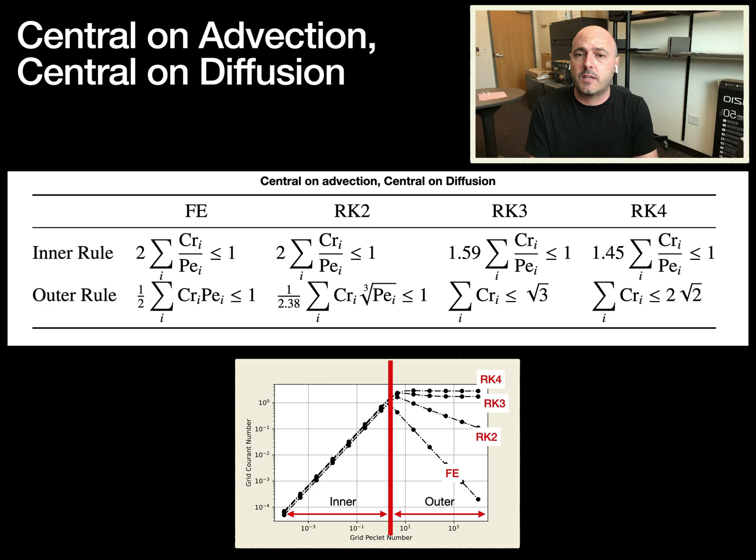This is the most common discretization scheme used both for scalar transport and for momentum equations. We have these stability rules in one, two, and three dimensions. You just have to adjust the summation depending on your dimension. Observe that we have two rules for each integrator: forward Euler, RK2, RK3, RK4, shown in that plot below Courant versus Peclet. These two rules, we call them inner and outer regions. They roughly correspond to low Peclet limit or diffusion-dominated flows and high Peclet limit or convection-dominated flows. In the paper, we explain that those are actually related also to the wave angles of the eigenvalues.